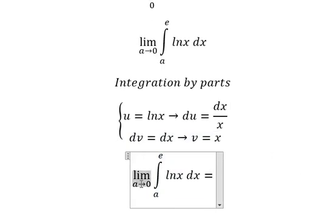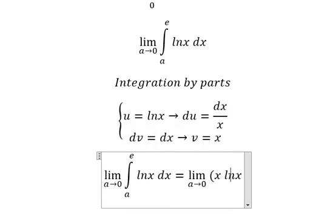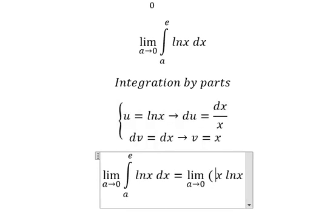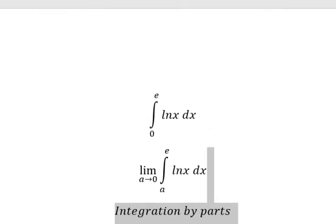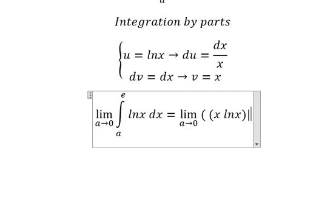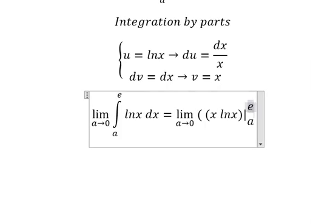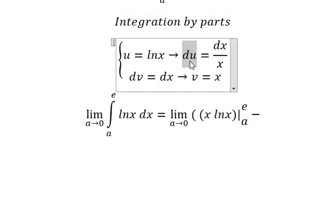So we keep the same limit. We have u multiplied by v from a to e, and we put the bounds from a to e, minus the integral from a to e.